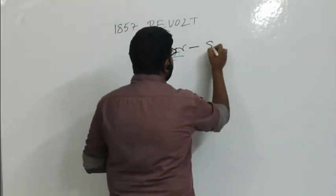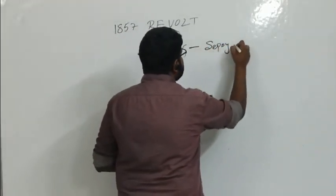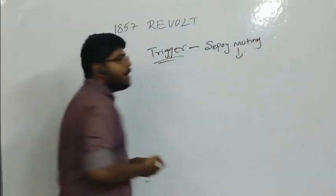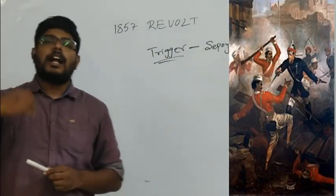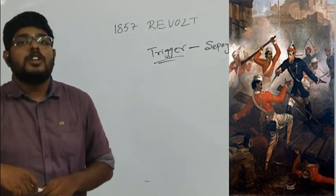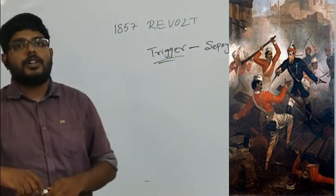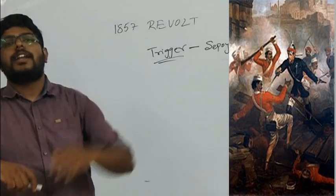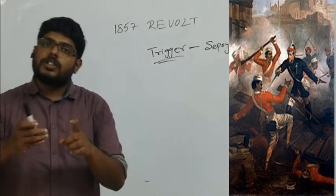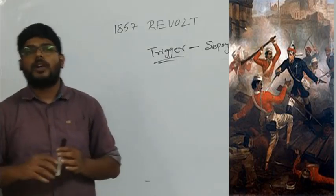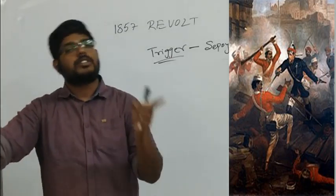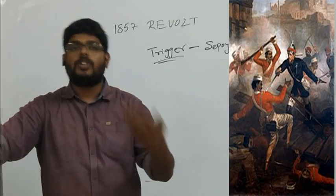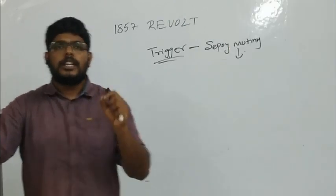The thing which acted as the trigger of the 1857 revolt was the sepoy mutiny. A person called Mangal Pande started the first revolt as a soldier, and that revolt is called the sepoy mutiny. So sepoy mutiny acted as the trigger to the 1857 revolt, which is different from the revolt itself.